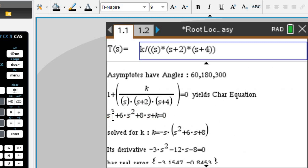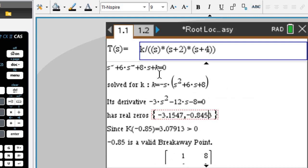Our characteristic equation is right here. When we solve it for k, find the derivative and its zeros, it leads us to the breakaway point. In this case, it's only one of negative 0.85.